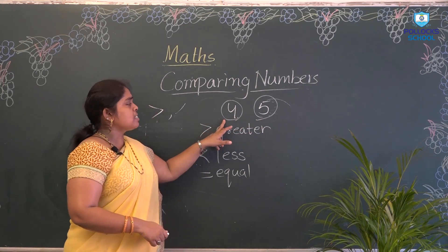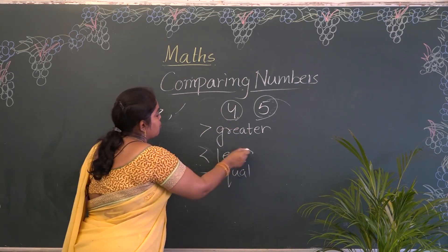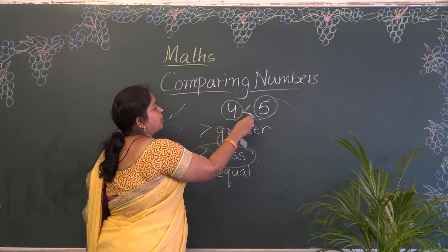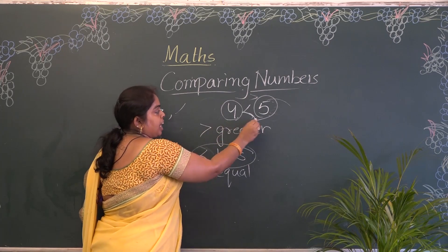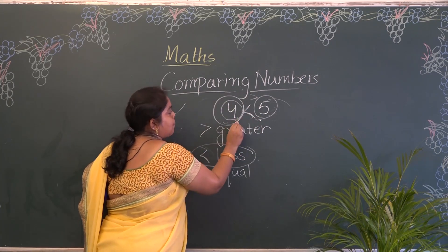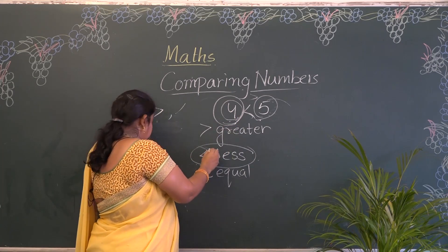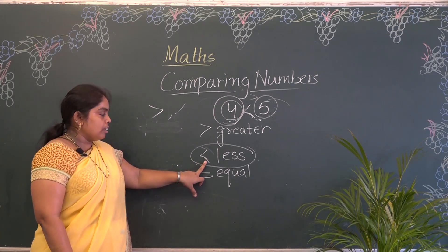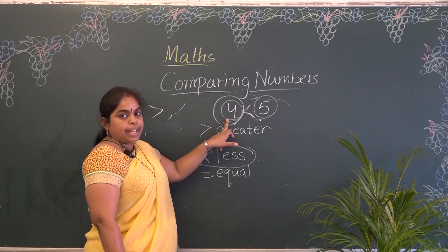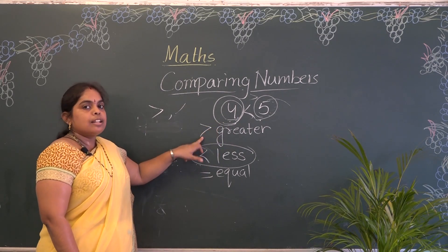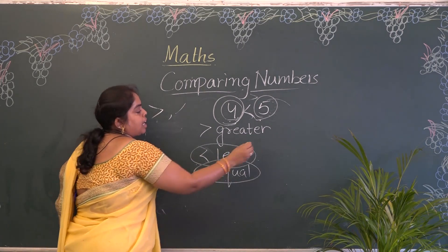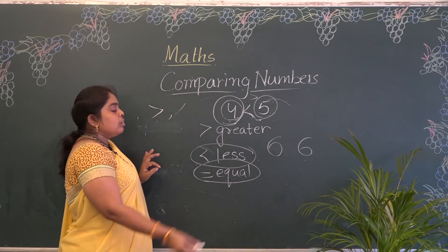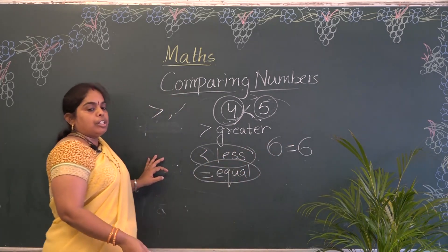So 4 and 5 — as I told, 4 is the small one, so we use less than. Why only less than and not greater? When we are comparing 2 numbers and the first number is small, we use the less than symbol. When the first number is big, we use the greater than symbol. If I take 6 and 6 — both are equal — then only we use the equal to symbol.